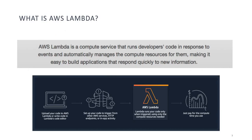What is AWS Lambda? AWS Lambda is a compute service that allows you to run your code in response to events and automatically manages the compute resources required by your code, making it easy to build applications that respond quickly to new information. You can use Lambda to build applications that handle high volumes of data and automate business processes.